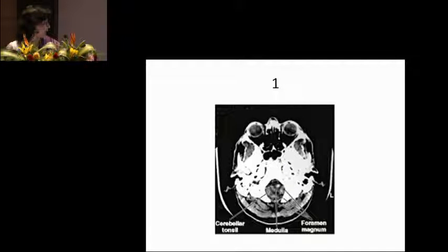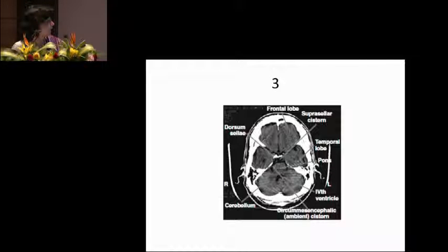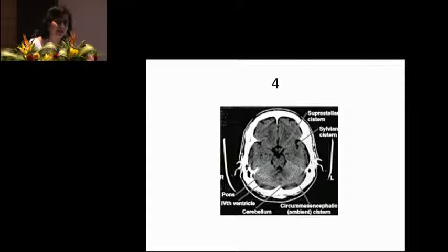The first level is the base of the skull, where you can start seeing the medulla and the cerebellar tonsils. As we go up, that's the cerebellar level — you can still see the cerebellum, but the temporal lobes start to appear, along with the ethmoid and sphenoid sinuses, the mastoid air cells, and the external auditory meatus. In a fracture of the base of the skull, you'll see blood here. The third level is the higher pons level — the pons has appeared, along with the frontal lobes, temporal lobes, and cerebellum. You've also started to see the fourth ventricle and the suprasellar cistern, just behind the dorsum sellae where you'd expect the pituitary and the circle of Willis. Higher up, you see the suprasellar cistern, the sylvian cistern, the fourth ventricle, and the circummesencephalic cistern — all important because they get compressed as brain pressure rises.